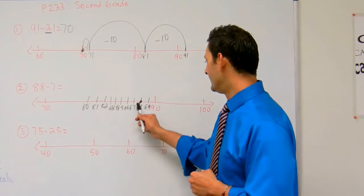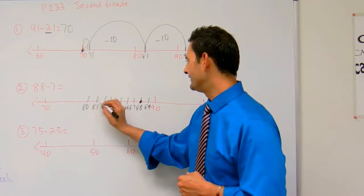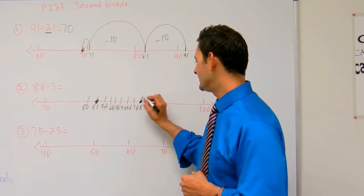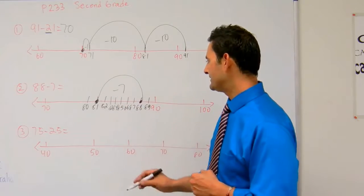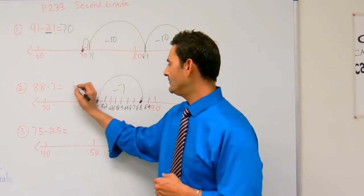Minus 7: 1, 2, 3, 4, 5, 6, 7. I'm just going to jump back minus 7, so 88 minus 7 equals 81.